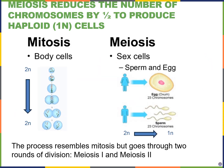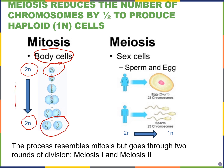Let's compare mitosis and meiosis quickly. In mitosis, the purpose was to generate identical cells, and this happens in all of our body cells — our somatic cells. We started with a single diploid cell and ended up with two genetically identical diploid cells, so the ploidy does not change. In meiosis, we want to reduce the chromosome number. Meiosis happens in our sex cells, to generate our sperm and egg. We start with diploid germ cells and end up with haploid cells at the end of meiosis.